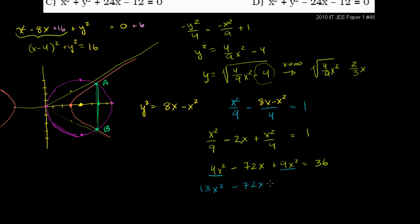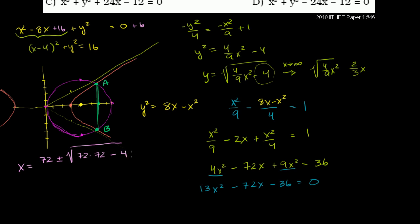Subtracting 36 from both sides gives 13x squared minus 72x minus 36 equals 0. Now we just use the quadratic formula. x equals negative b, which is 72, plus or minus the square root of 72 squared minus 4 times 13 times negative 36, all over 2 times 13, which is 26.